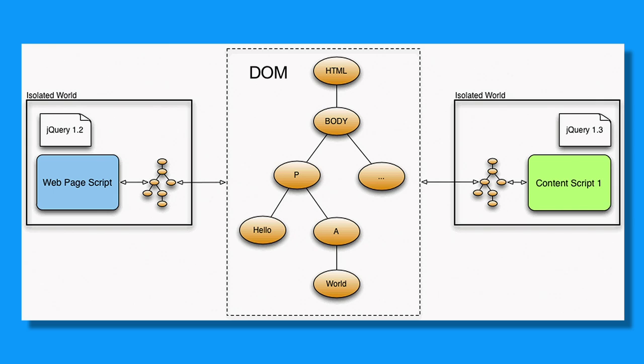Many isolated worlds can share access to a single DOM tree, but when they do, they each get their own complement of JavaScript objects to represent the nodes in the tree. Since no JavaScript objects are shared between isolated worlds, it is not possible for web page JavaScript to use the shared DOM to break out of the normal web page sandbox and somehow get access to the content script or its APIs.